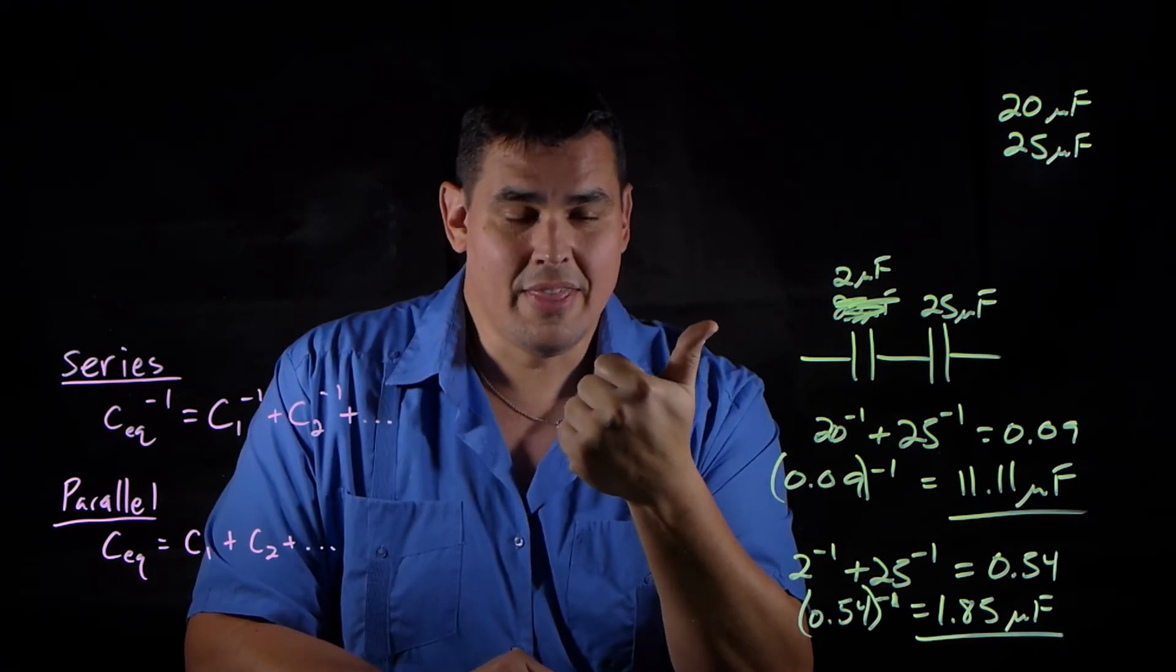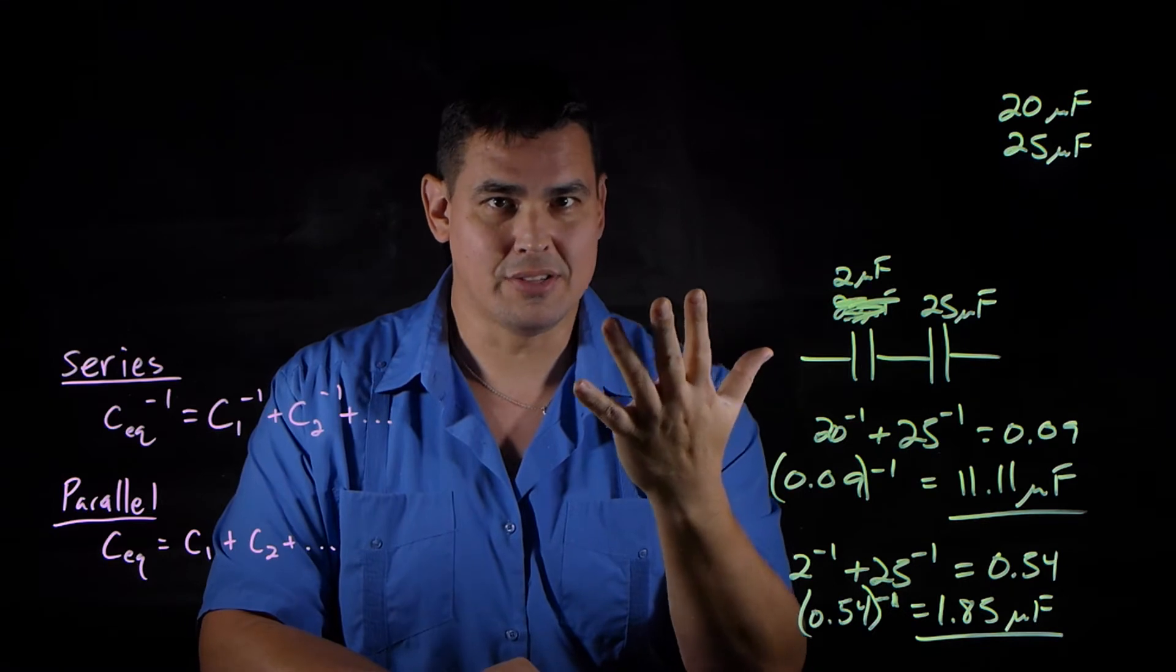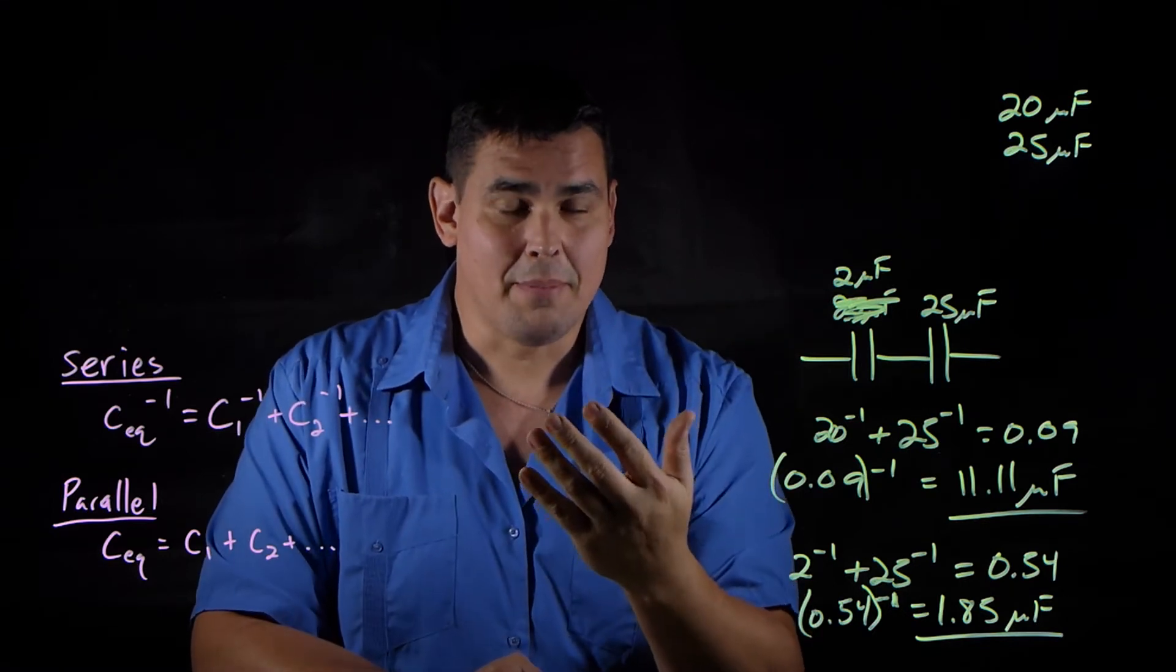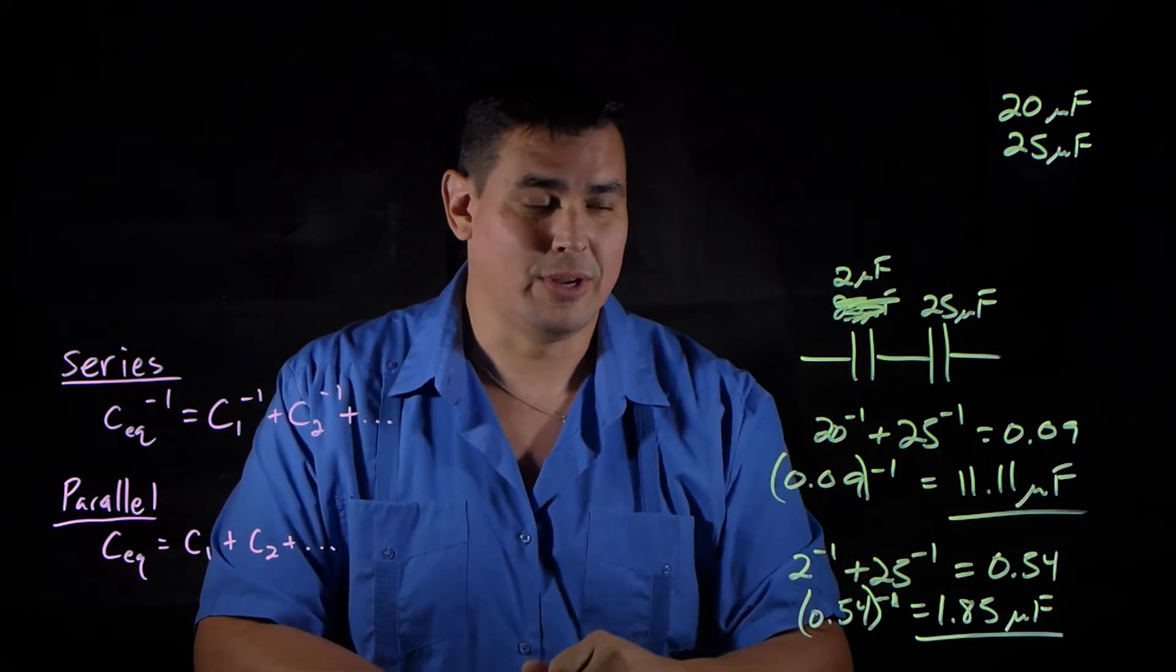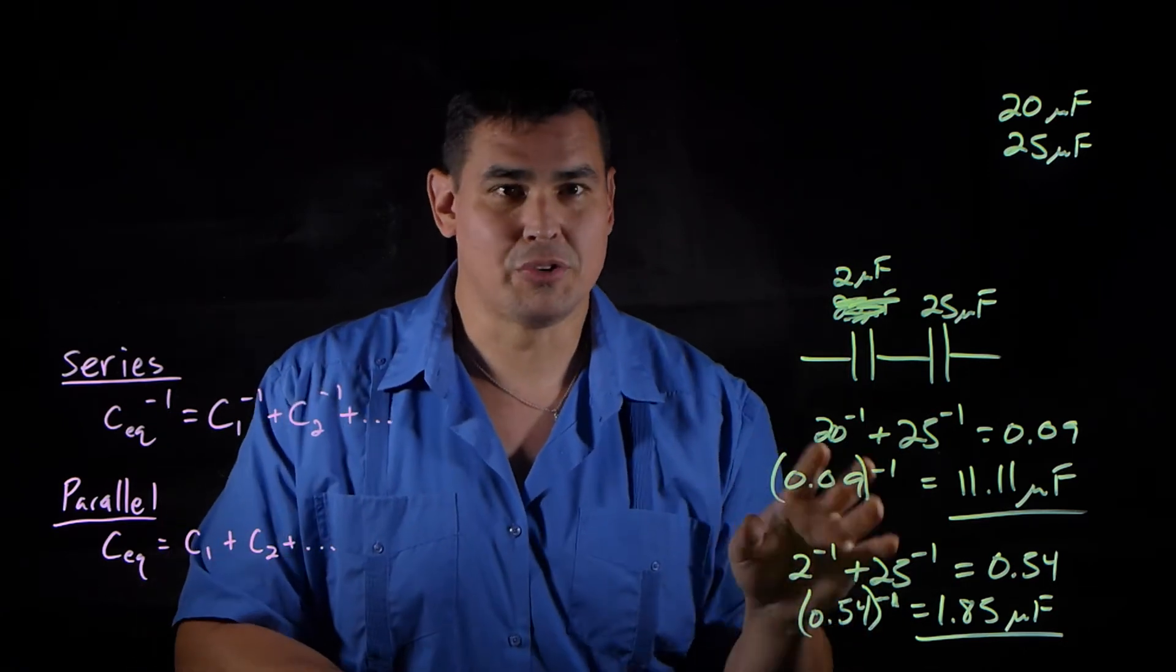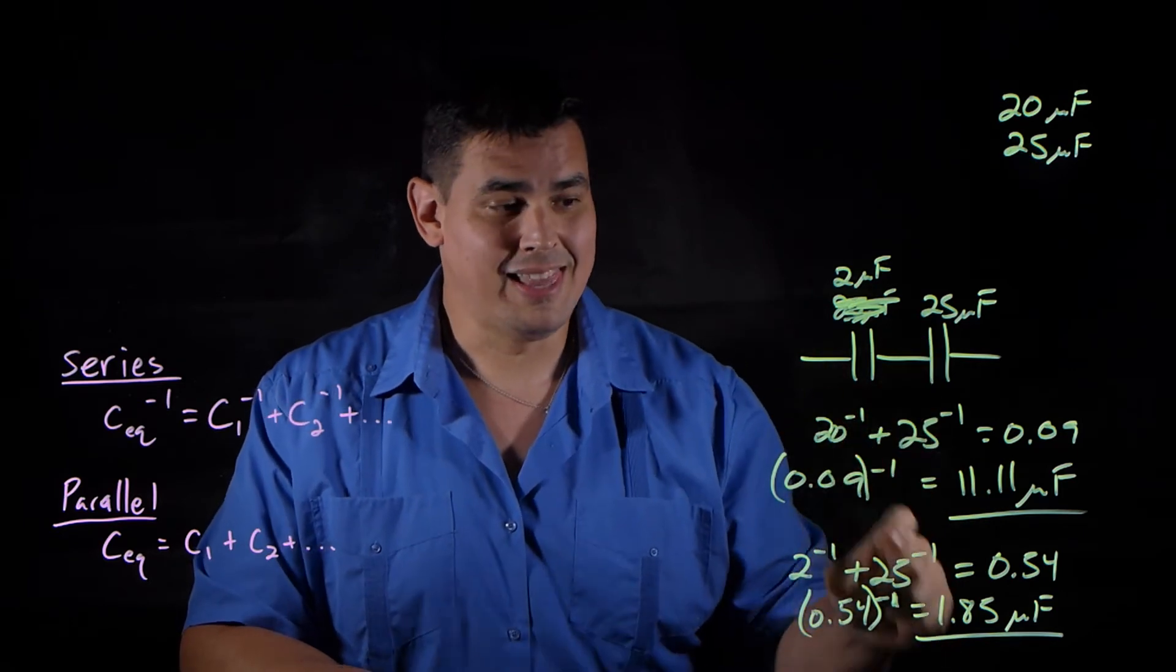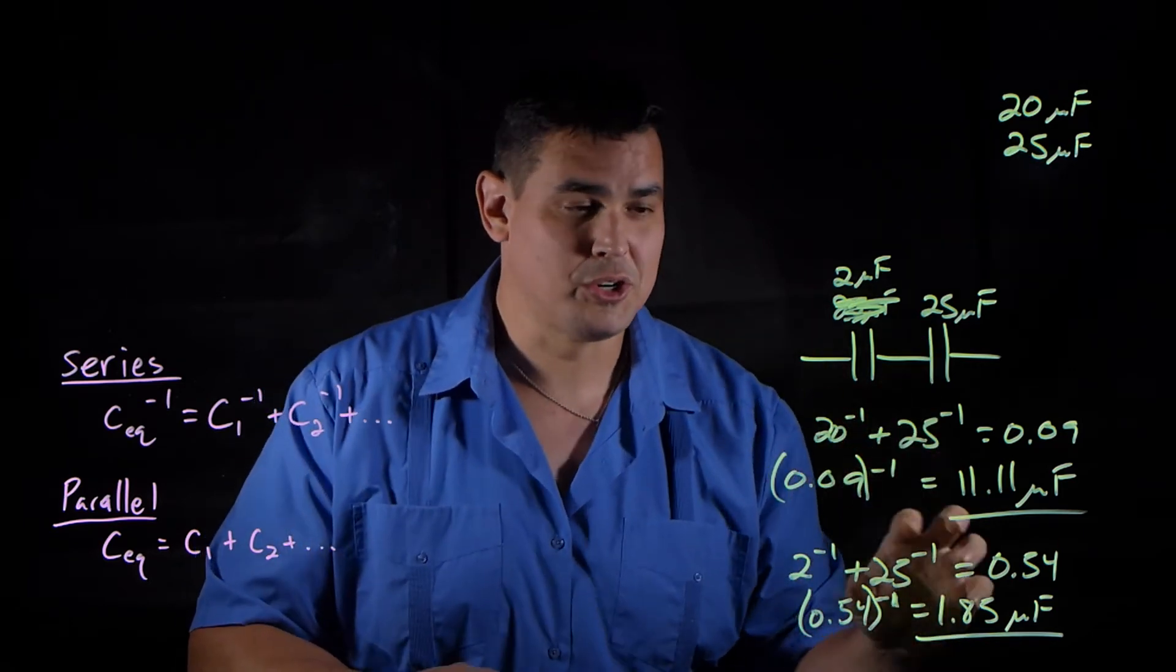So if I had, like, let's say I did 5 capacitors, and one of them was 1, and then I had 100, 1000, 10,000, and 100,000 microfarads, when I added all those up, my answer would be less than 1. That works for resistors, too. So if you're looking and trying to figure out which value is going to fit here, the equivalent capacitance is going to be less than the smallest resistor that you're combining.